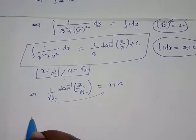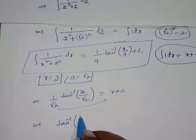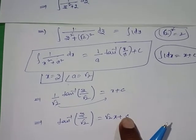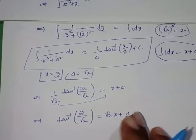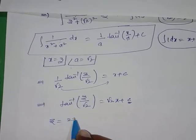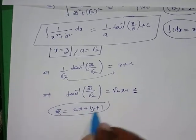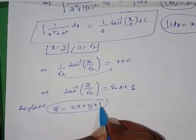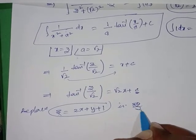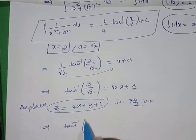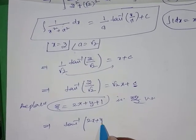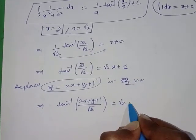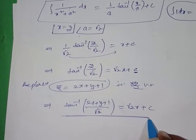Rearranging, since 1/√2 is in the denominator, transfer it: tan⁻¹(z/√2) = √2·x + c (where the constant absorbs √2). Now back-substitute z = 2x + y + 1: tan⁻¹((2x + y + 1)/√2) = √2·x + c. This is the solution of the required differential equation.